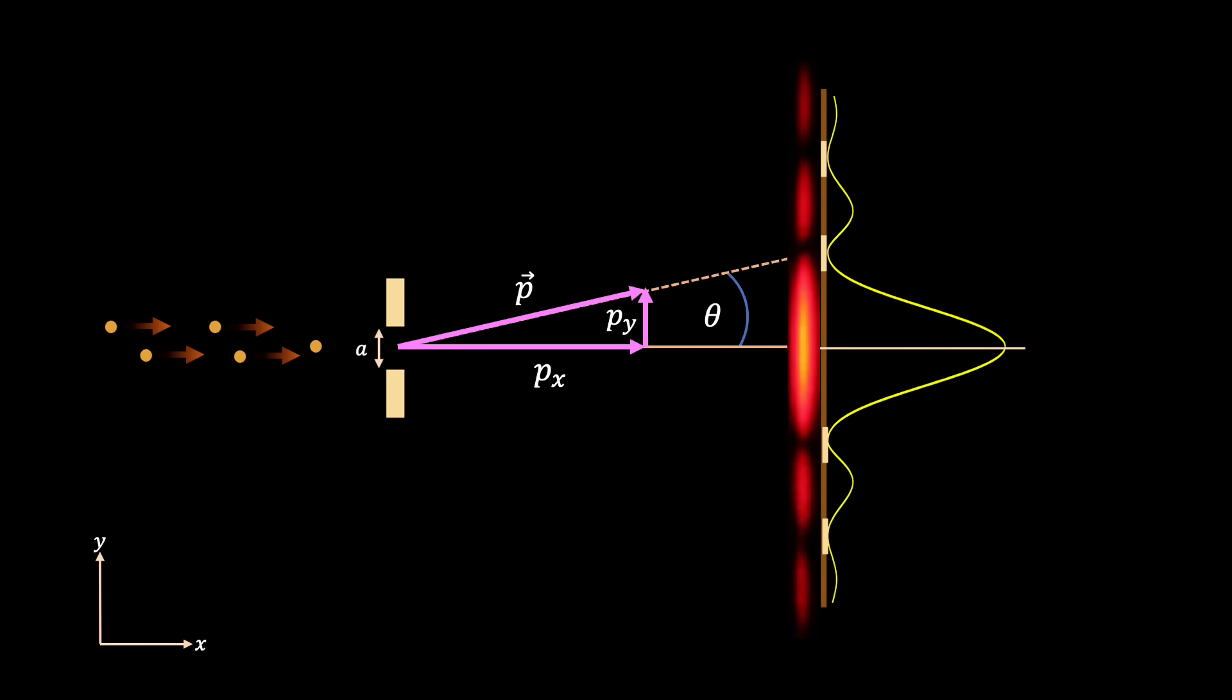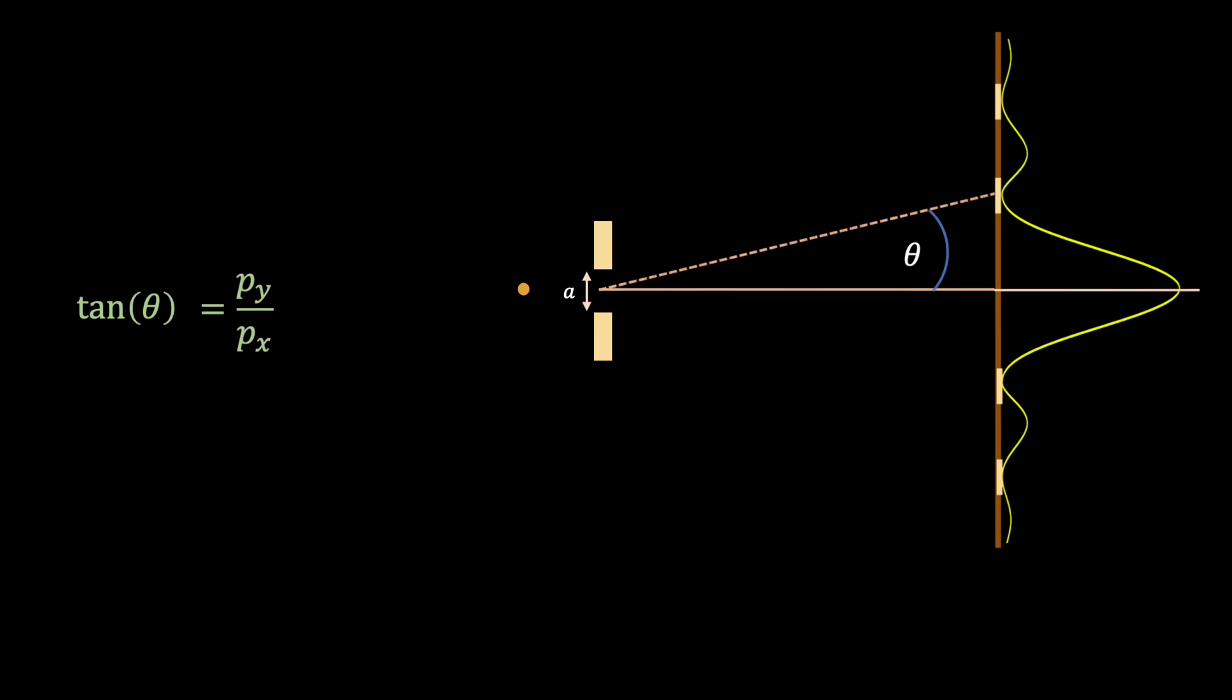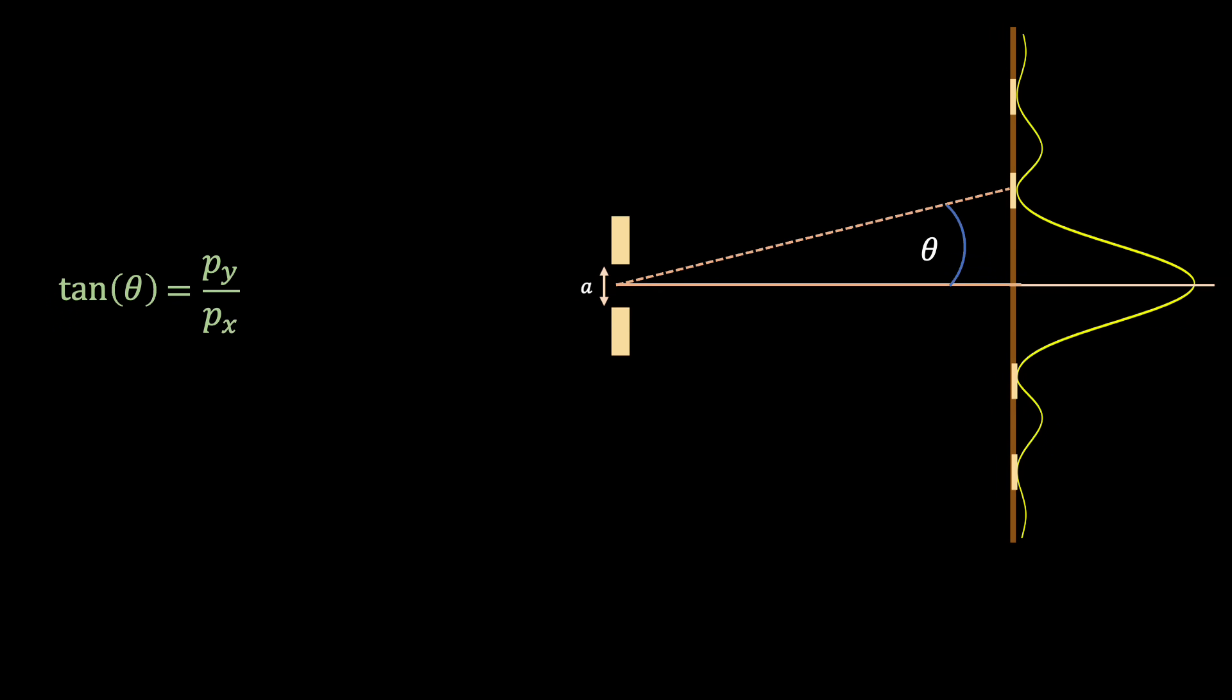Now, if we look at the geometry of this situation, then we see that the x and y components of momentum, along with the resultant momentum, form a right-angled triangle, and therefore we can relate the x and y components using trigonometry by recalling that tan is equal to the opposite divided by the adjacent side of our triangle, and that is simply equal to p subscript y divided by p subscript x. Now, given that the angle theta is in general very very small, we can use the small angle approximation to write tan is roughly equal to theta, provided that theta is measured in radians, and therefore we can write that theta is roughly equal to p subscript y divided by p subscript x.